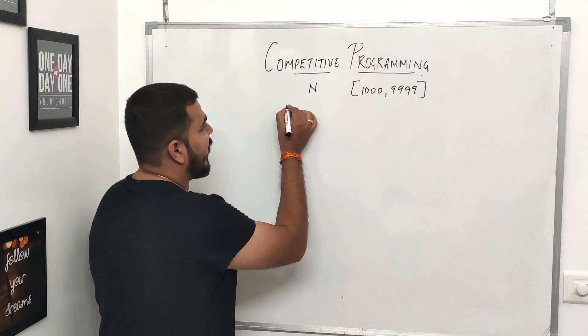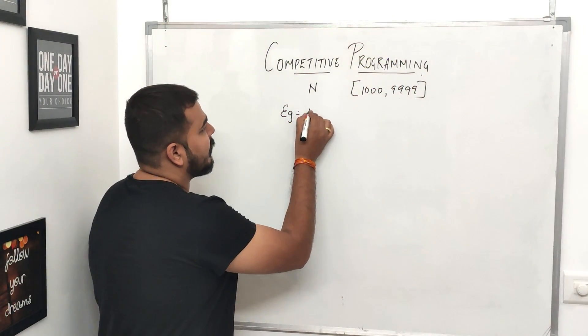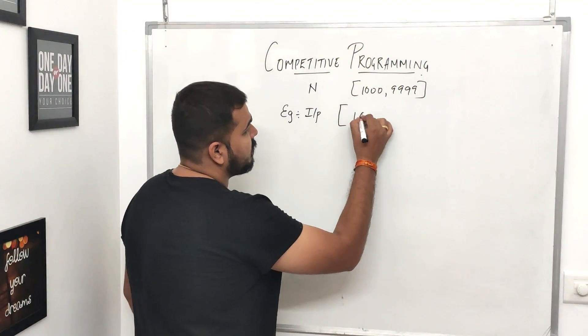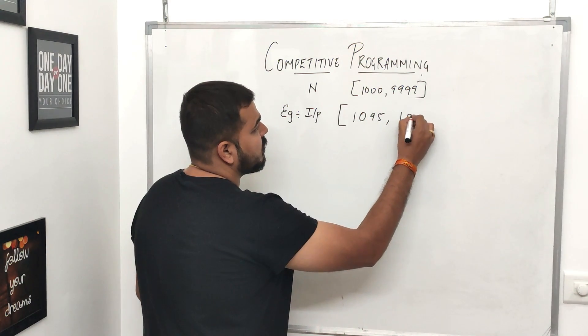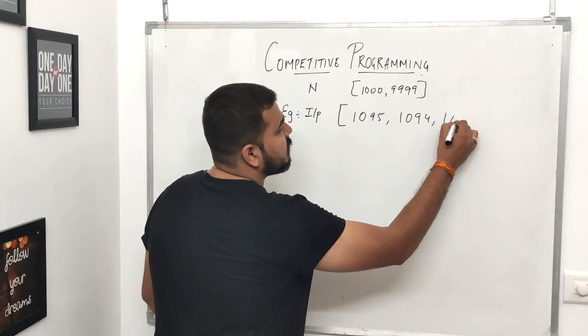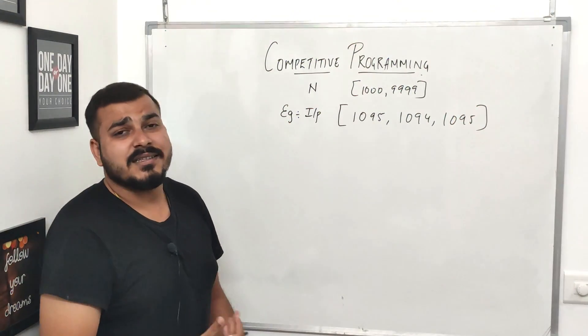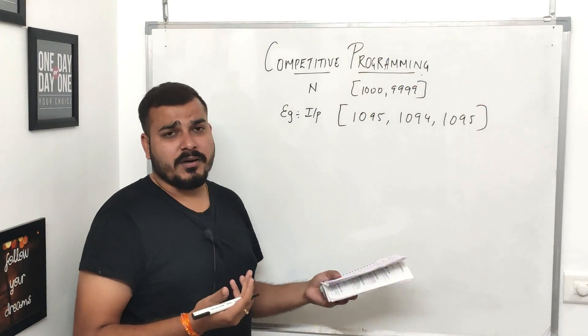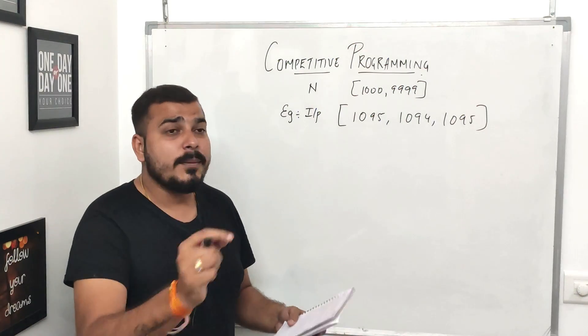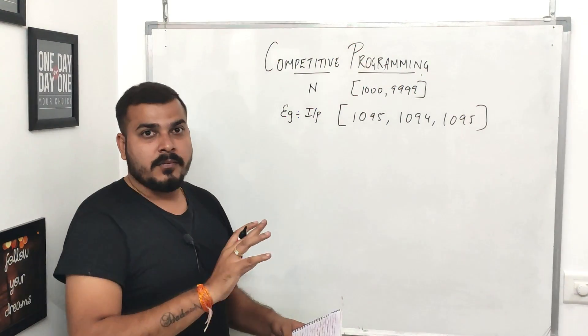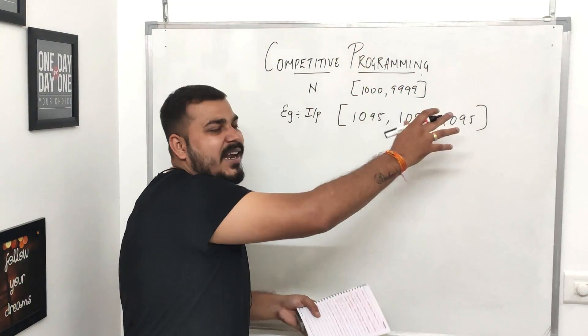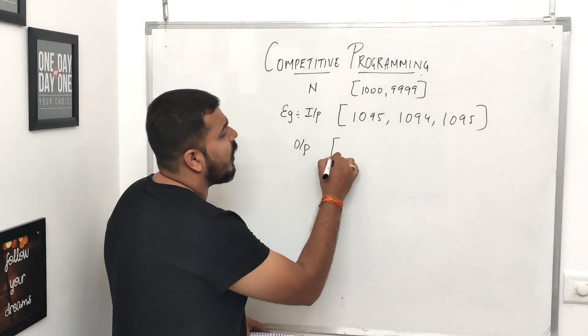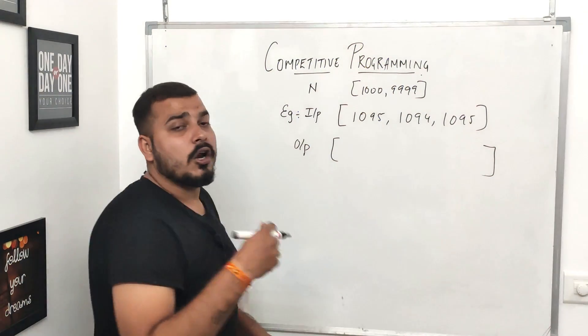What does this basically mean? Suppose if I have an example as my input: 1095, 1094, 1095. Now suppose in this particular case, I don't consider in what order this particular input is. But my output should be in a non-decreasing order. This may be in ascending or descending order, it is fine. But my output should be in the form of an ascending order or non-decreasing order.